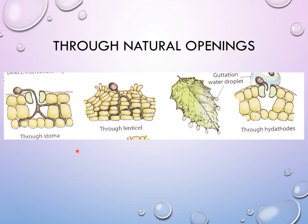Lenticels are lens-shaped pores for gas exchange located on the stems, twigs, or fruits of the plant. Examples of organisms which use lenticels to get inside are Actinomyces, Penicillium expansum, Spongospora, and Armillaria.